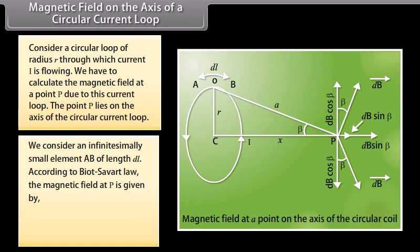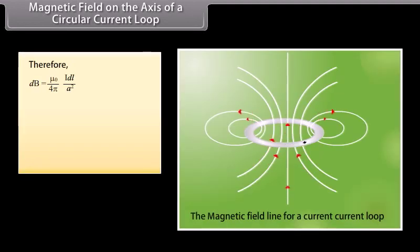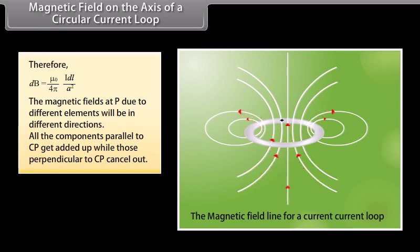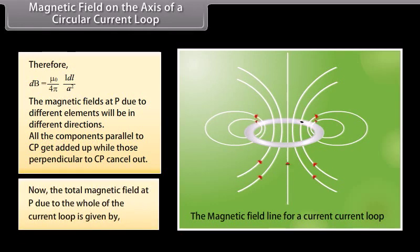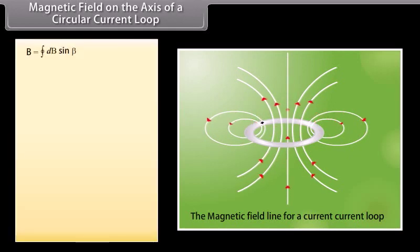the magnetic field at P is given by μ₀/(4π) · I·dl·sinθ / A². Here θ = 90° and sinθ = 1. Therefore, the magnetic field at P is μ₀/(4π) · I·dl / A². The magnetic fields at P due to different elements will be in different directions. All components parallel to CP get added up while those perpendicular to CP cancel out. The total magnetic field at P due to the whole current loop is given by the closed integral of dB·sinθ.